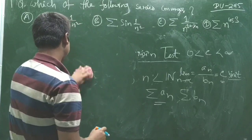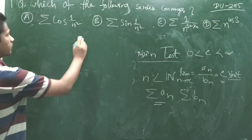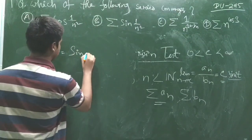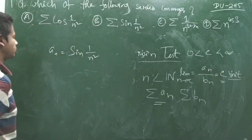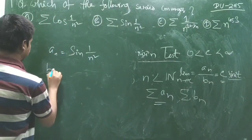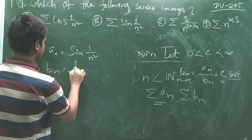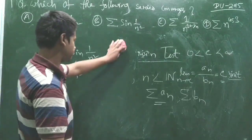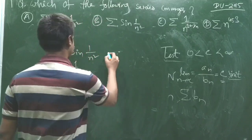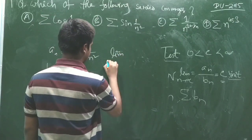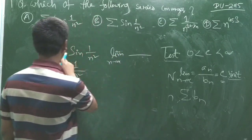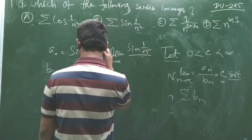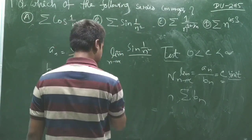So for this series, we take aₙ = sin(1/n²) and bₙ = 1/n². Now we compute the limit as n tends to infinity of aₙ/bₙ, which is sin(1/n²) divided by 1/n².